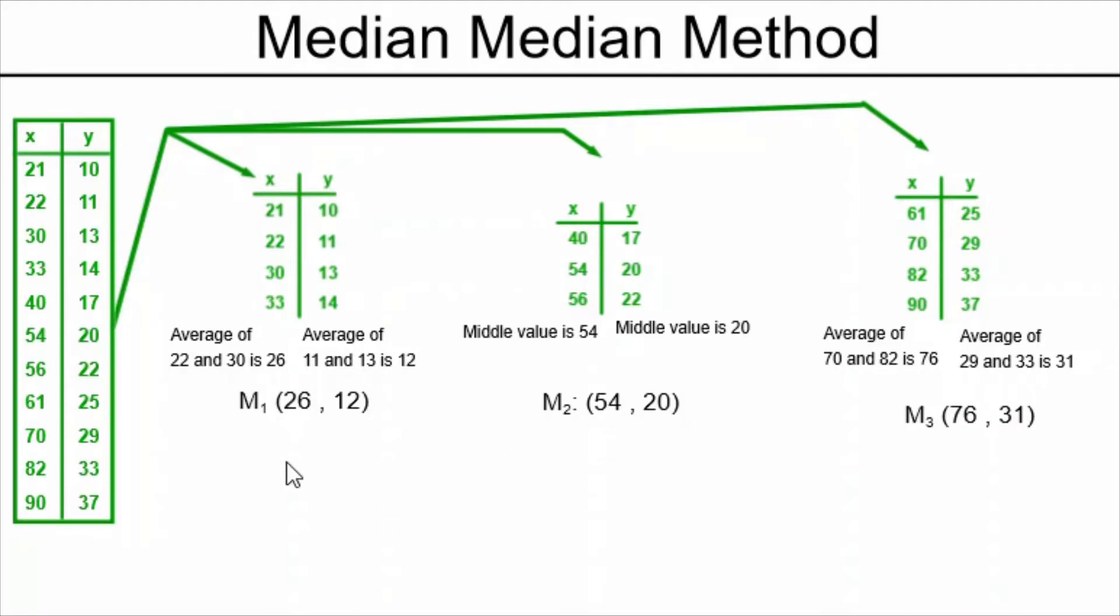Once we've done that, we find the median of the x's and the median of the y's for each of the tables, so we're finding six medians.